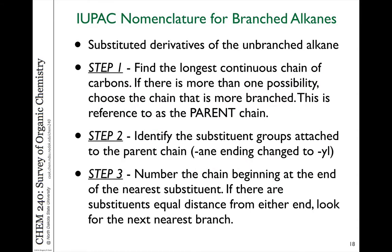When we have branched alkanes, the first step is to find the longest continuous chain of carbons in that molecule, keeping in mind that that might not be just the linear chain from left to right — it could be longer going off in another direction depending on how you draw it. If there is more than one possibility for the longest chain depending on which branch you choose to count from, choose the chain that is the most branched. We want the longest chain or the parent of the molecule to be the one that has the most branches off of it, which avoids the formation of very complex substituents.